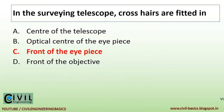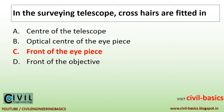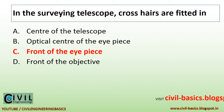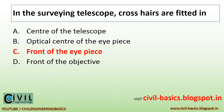In the surveying telescope, crosshairs are fitted in front of the eyepiece.